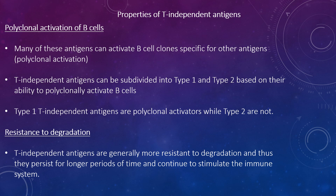T-independent antigens can be subdivided into type 1 and type 2 based on their ability to polyclonally activate B-cells: type 1 T-independent antigens are polyclonal activators while type 2 are not. T-independent antigens are generally more resistant to degradation and can persist for longer periods, continuing to stimulate the immune system. These antigens are characterised by the same antigenic determinant repeated many times in a polymeric structure.